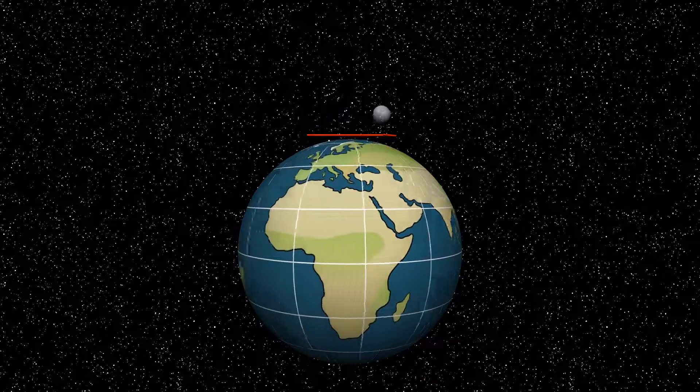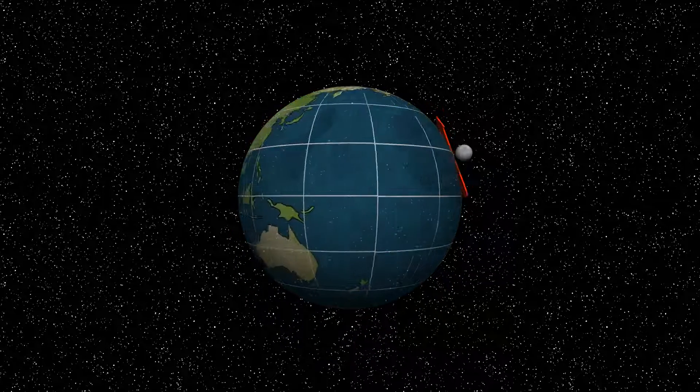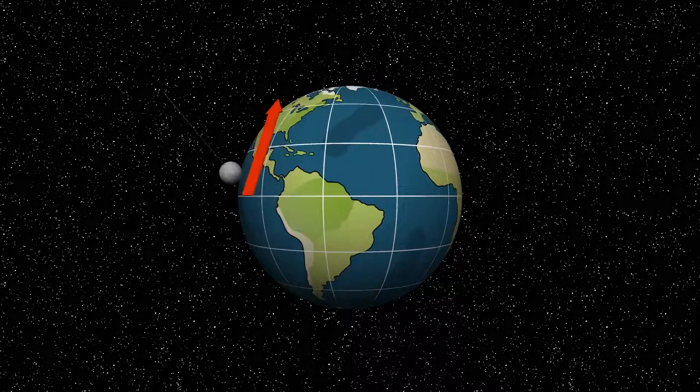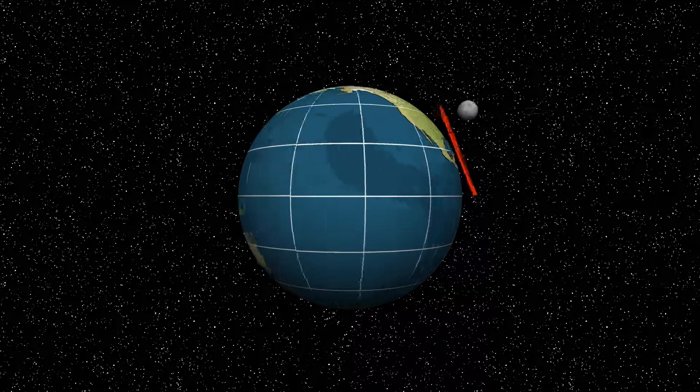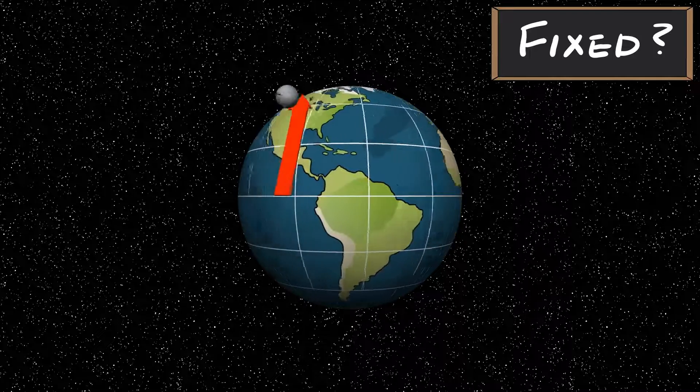But what happens when we move the pendulum away from the poles? We know we need to keep the pendulum fixed just as we did before at the poles. But unlike when the pendulum was at the poles, it's now being flung around Earth's axis.